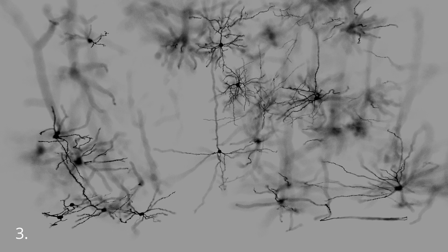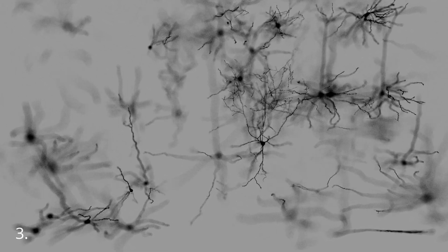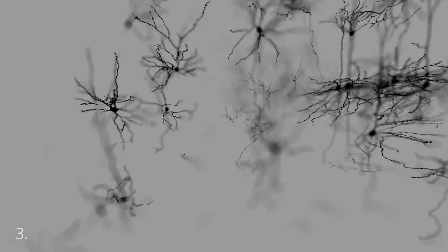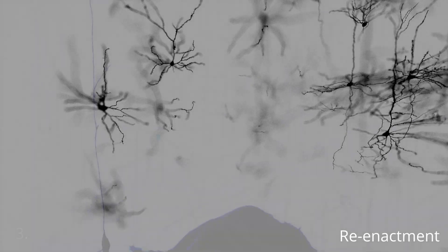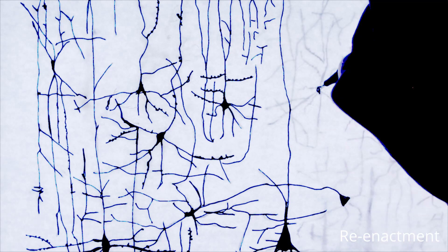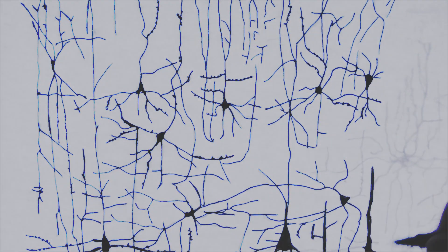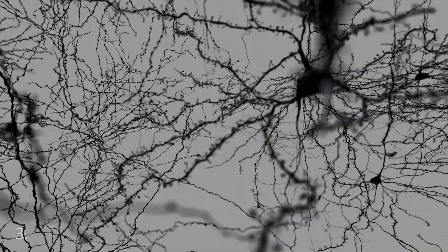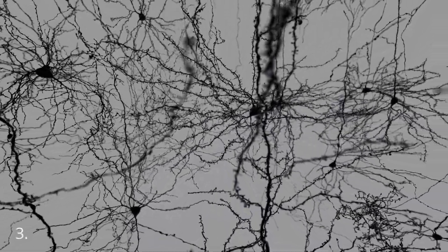Golgi's Black Reaction is a tissue stain, still used today, that gives contrast to only around 1% of cells. This undersampling helped scientists of the day to distinguish between individual neurons, but may have left a legacy of a sparse view of the brain, which persists in popular science to this day.